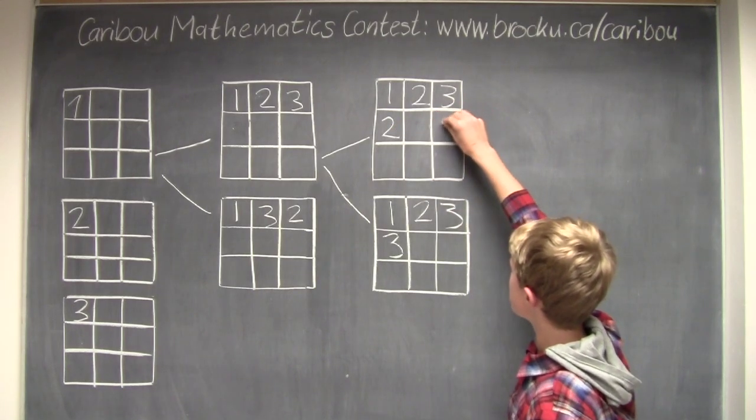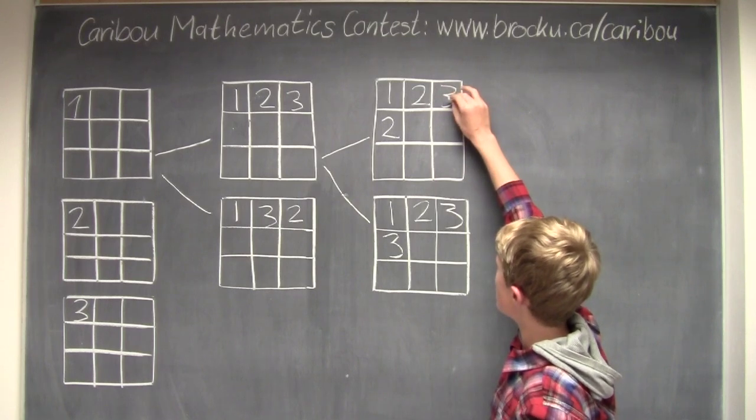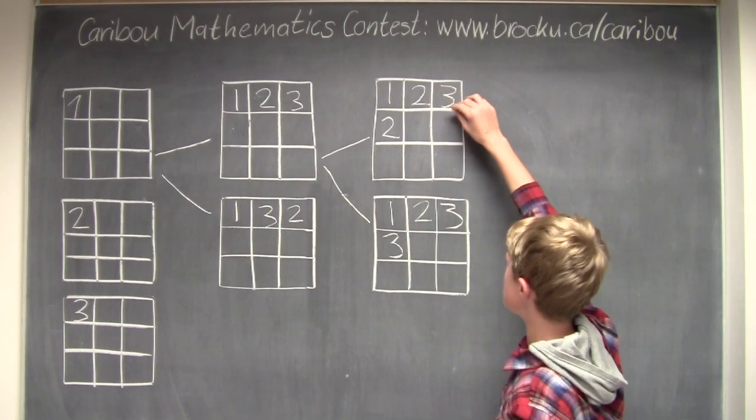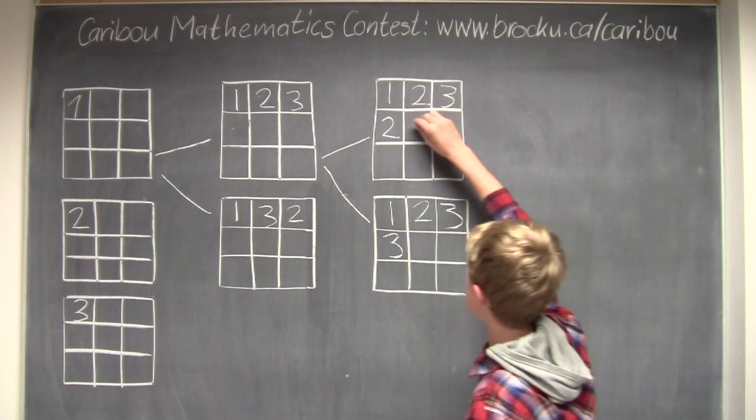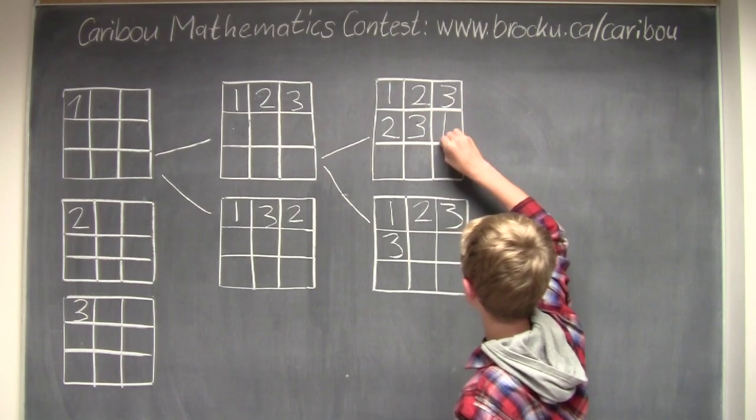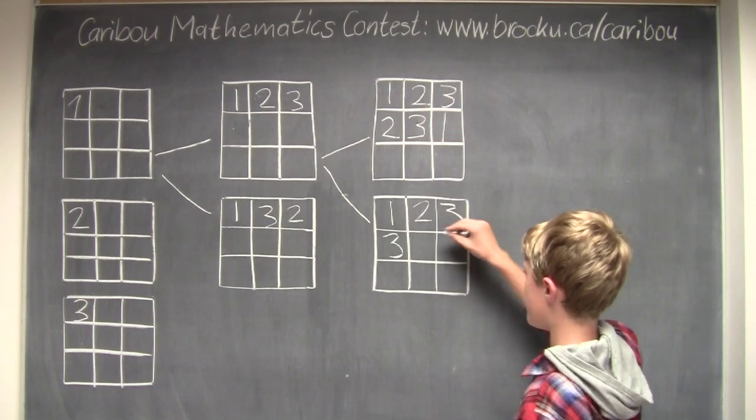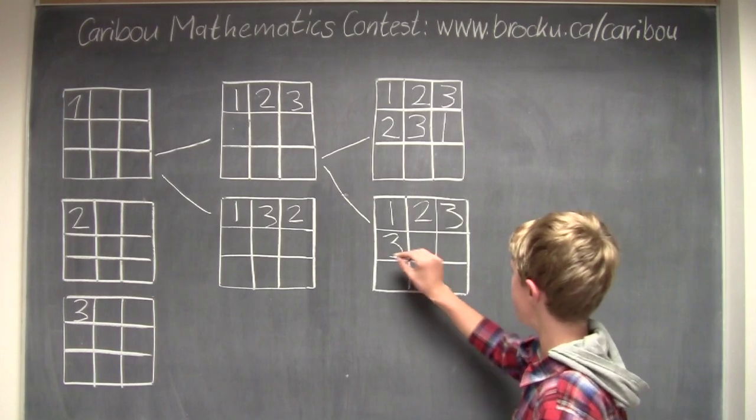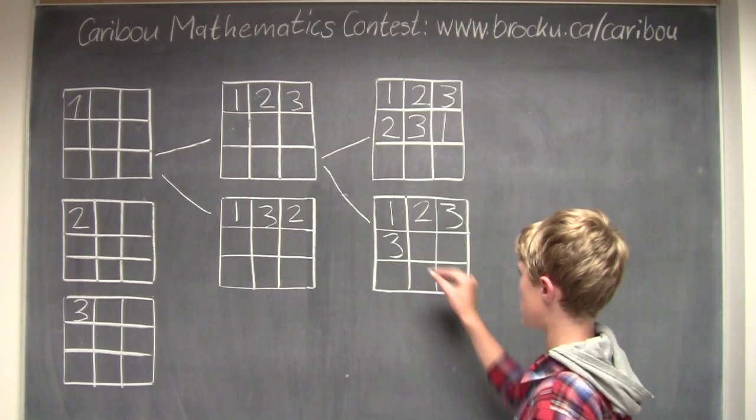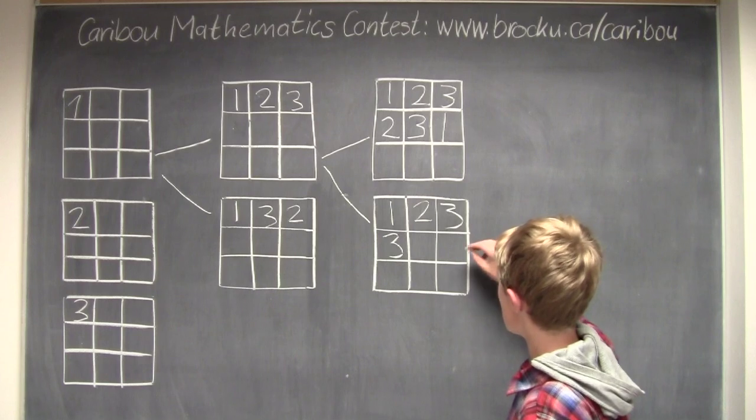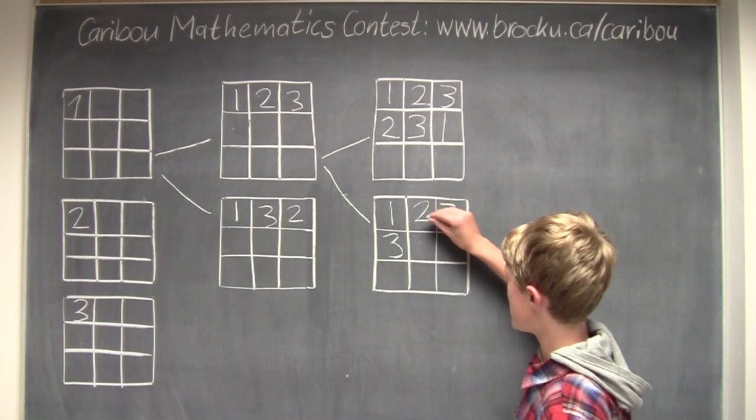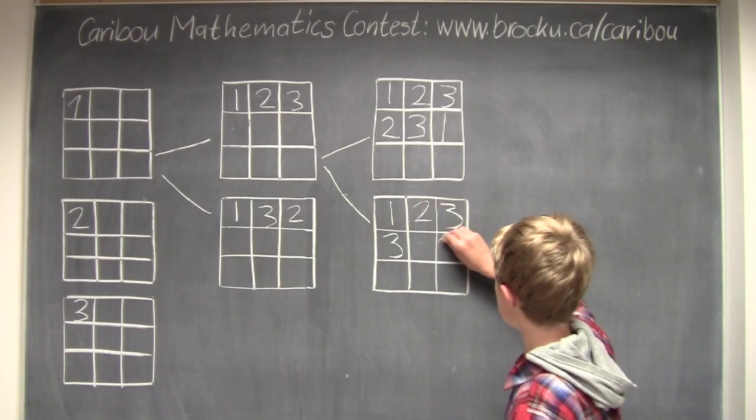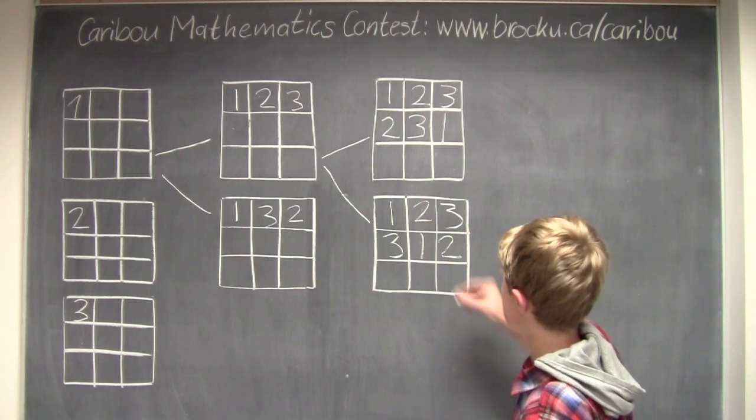But 3 cannot go there because there's already 3 there. So that would be 2 3s in one column. So 3 has to go here, and 1 has to go here. And for here, it's the same thing. We have 3 options, but now there's 3, so we have 1 and 2. So 2 already cannot go there because 2 is right there. So 2 has to go here, and 1 has to go here.